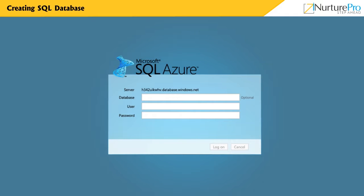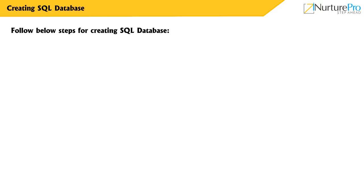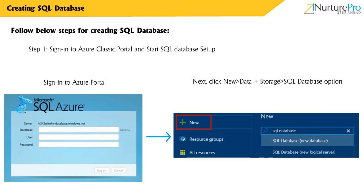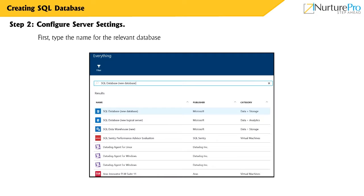Let's see how to create SQL database in Azure. Follow the below steps for creating SQL database. Step 1: Sign in to the Azure Classic portal. From the menu, access the SQL database section. Step 2: Configure server settings. An SQL database server in Azure is located on a database server which can host multiple databases at a single point in time.